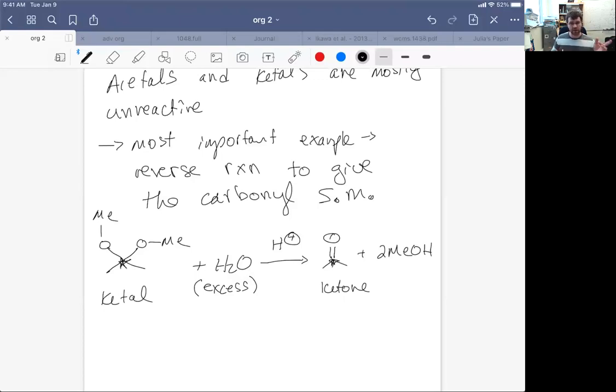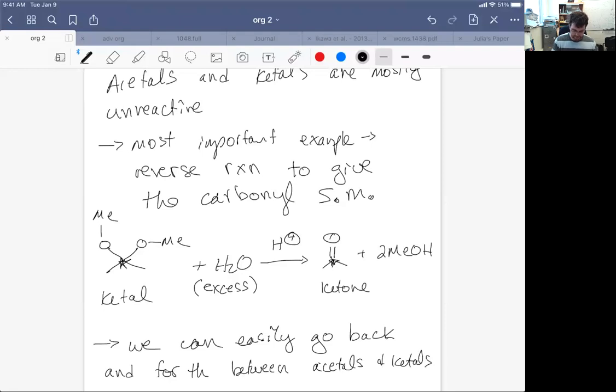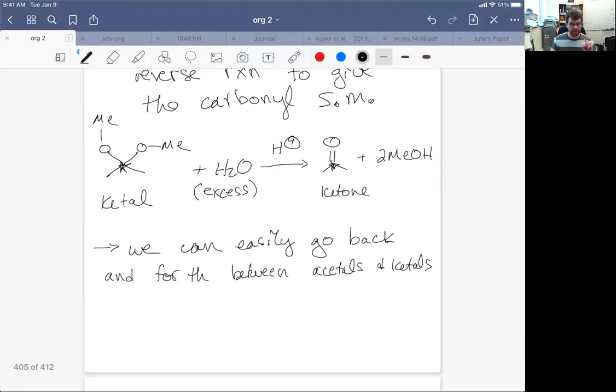This then serves as an important reaction for acetals and ketals because it's just chemistry that we can understand and control. So let's remind ourselves that the ketal or acetal carbon was ultimately a carbonyl carbon, a ketone or an aldehyde respectively, and that what we did was we took that ketone or aldehyde and we added a bunch of alcohol to get the ketal. So the takeaway here is we can go back and forth from acetal to ketal at will. We can easily go back and forth between acetals and ketals.